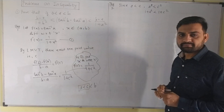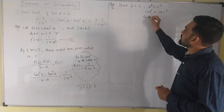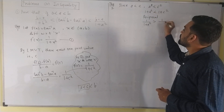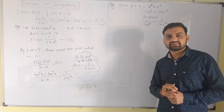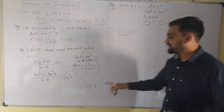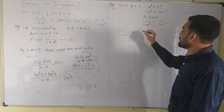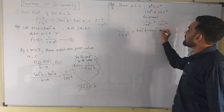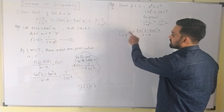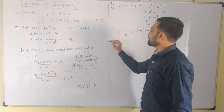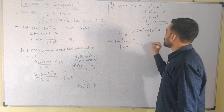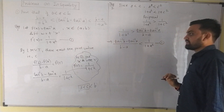I will add this. Now if we do reciprocal, what happens? 1 upon 1 plus A square is greater than 1 upon 1 plus C square. So: tan inverse b minus tan inverse a, upon b minus a, is less than 1 upon 1 plus a square. What equation did you do?